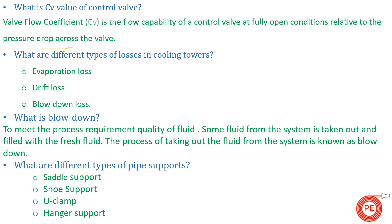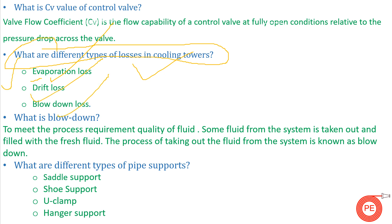The next question is: what are the different losses of cooling towers? Cooling towers are an important part of steel industries, oil and gas refineries, and many other industries. There are three main categories of losses: evaporation loss, drift loss, and blowdown loss. All three are part of the cooling tower cycle, and we have a detailed video on this topic on our channel.